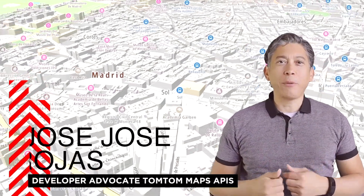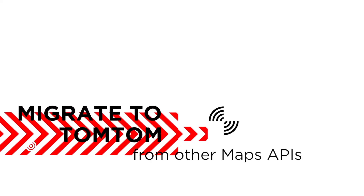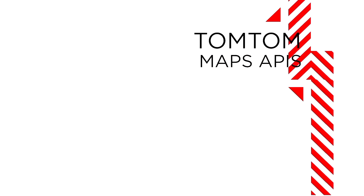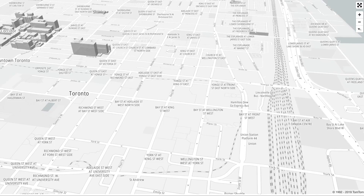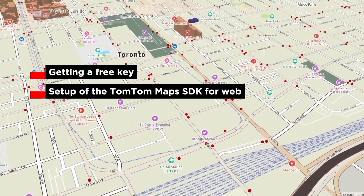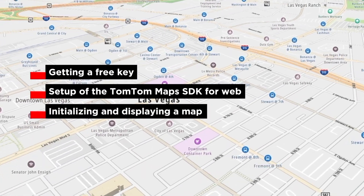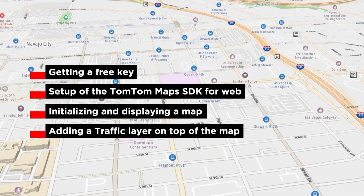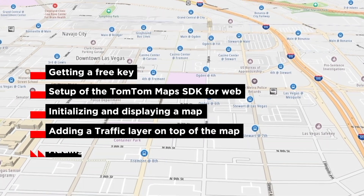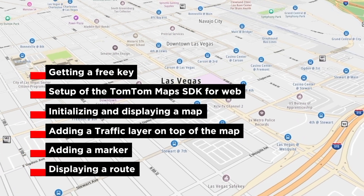Today, we'll go over how to help you migrate from Google Maps to TomTom Maps APIs. In this tutorial, we're going to first get a free API key, then set up the Maps SDK for web in our application, and initialize it and display a map. Later, we're going to add a traffic layer on top of it, learn how to add markers, and finally display a route.